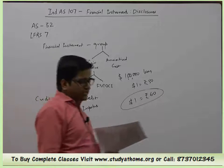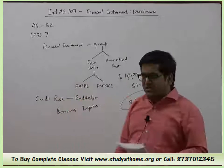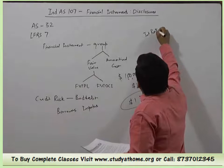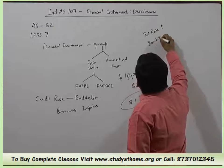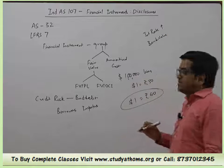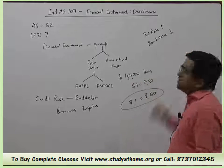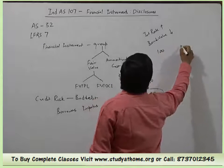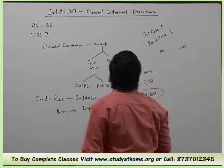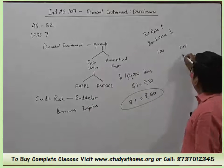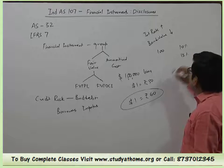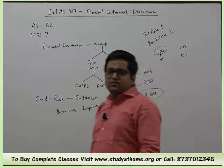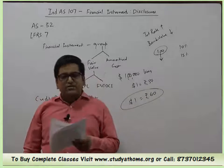Interest Rate Risk — the risk arising from changes in market interest rates. If market interest rate is high, the value of a bond or debenture investment falls. For example, if we bought a bond at ₹100 when market rate was 10%, but today the rate rises to 15%, then the bond's value will decline below ₹100. This is called interest rate risk.